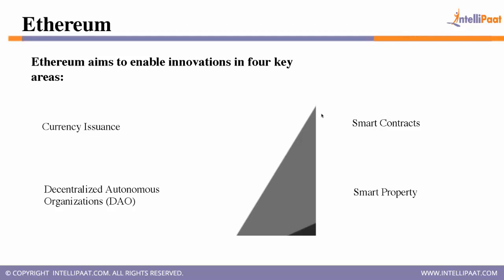Smart property is something like a land transfer. If I'm selling my land to you, it can be done through the blockchain. It's called 'smart' because it happens online rather than physically. The important topic we'll discuss is smart contracts.